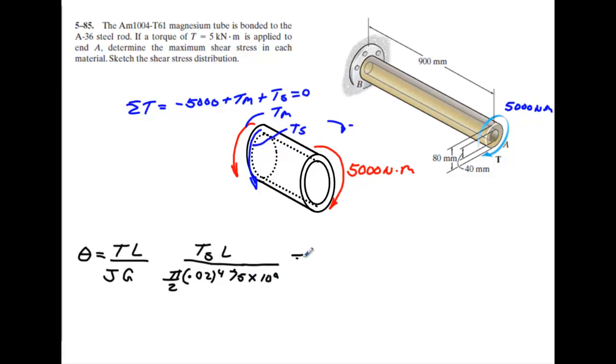Now we're going to set that equal to the torque of the magnesium times this length. Now the magnesium is a hollow tube. So the polar moment of inertia is going to be pi over two times the outer radius to the fourth power minus the inner radius, the hollow part, it's going to be 0.02 to the fourth power. And then we're going to multiply it by the shear rigidity of that material. And magnesium is approximately 18 times 10 to the ninth.